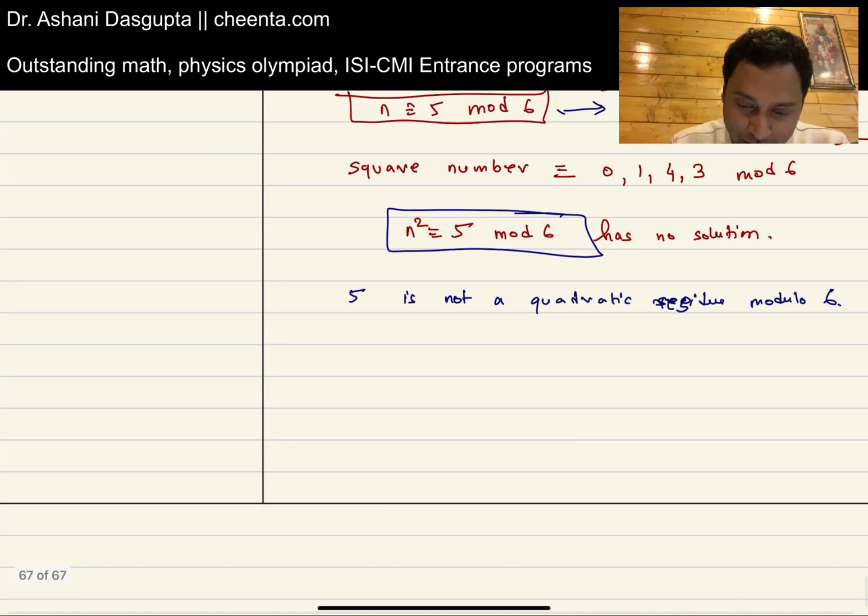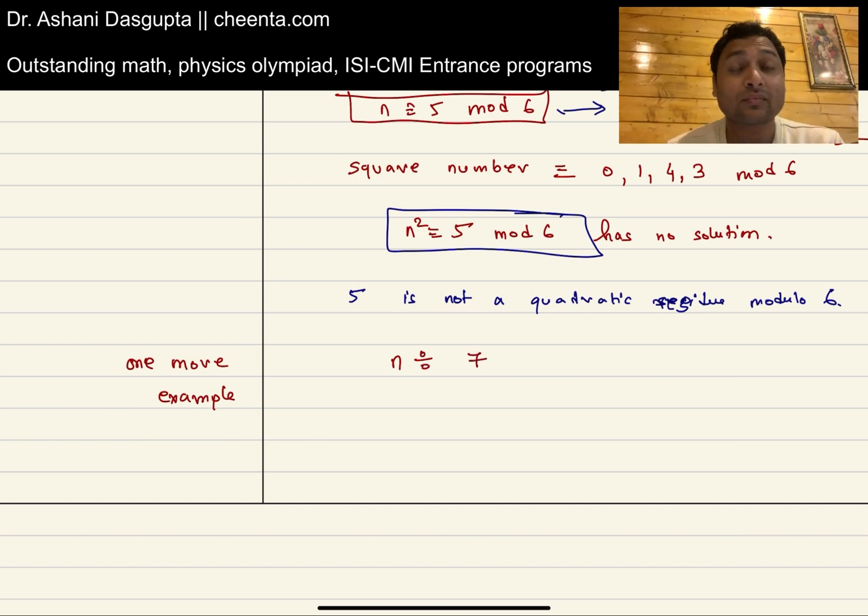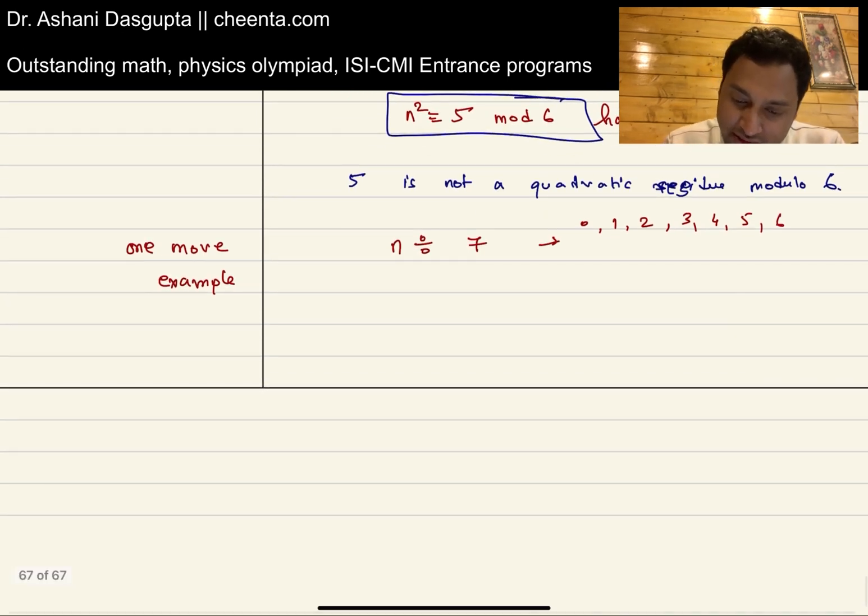I'll give you one more example. So if you divide any number by 7, you can get the remainders 0, 1, 2, 3, 4, 5, 6. So I'll do this quickly now. If you take the square...